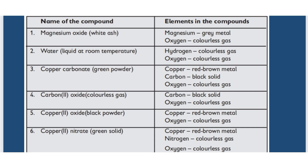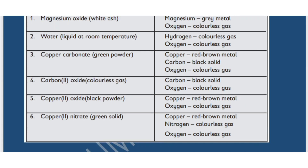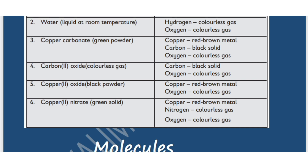Copper(II) oxide is a black powder made from copper, a red-brown metal, and oxygen, a colorless gas. Copper(II) nitrate is a green solid made from copper, a red-brown metal; nitrogen, a colorless gas; and oxygen, also a colorless gas. This demonstrates that compounds have different physical and chemical properties from the elements they are made of.